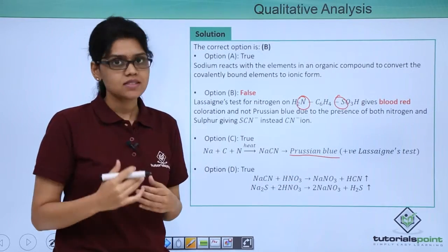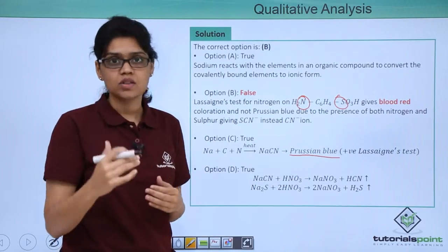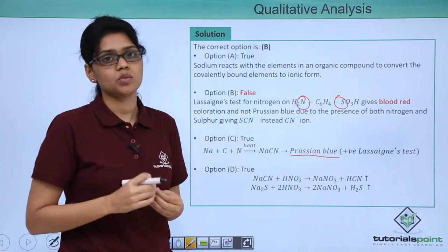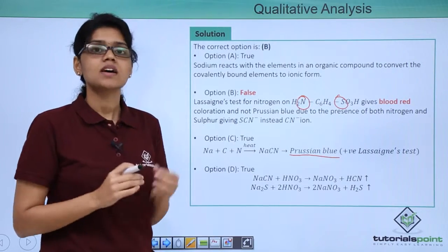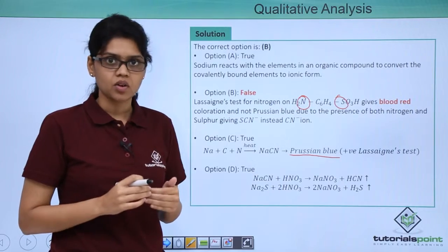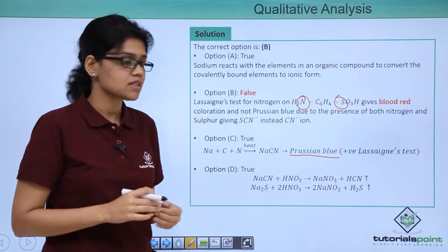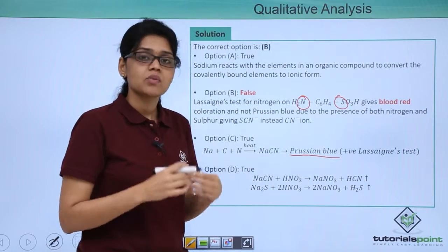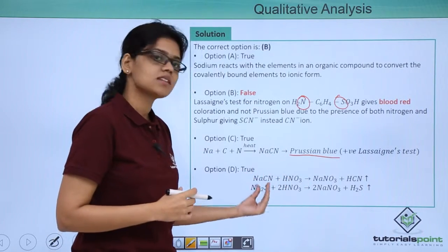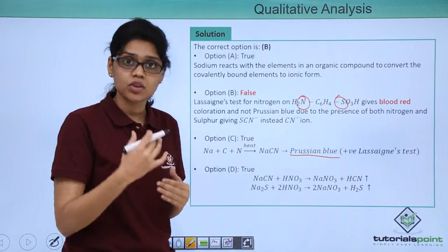Now option D states that the Lassaigne's test for halogen employs concentrated HNO3. It is true because when we have both nitrogen and sulphur in our organic compound, in order to remove their interference with the silver nitrate test, we use HNO3.